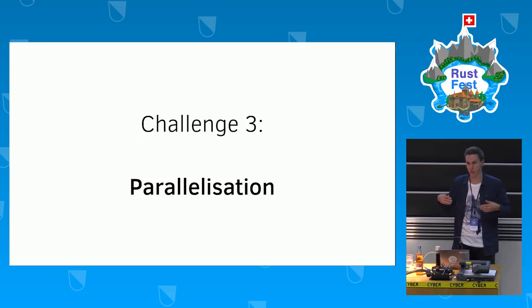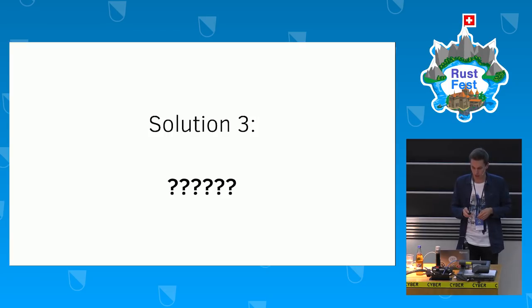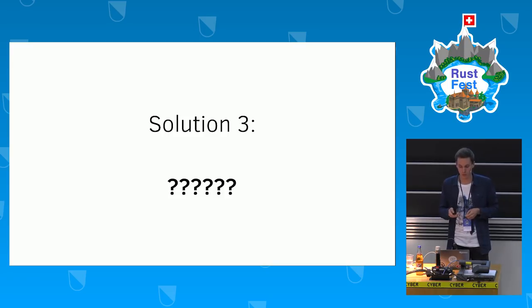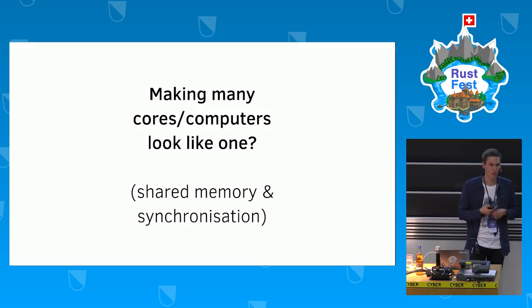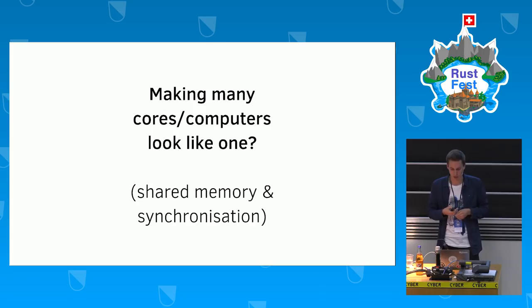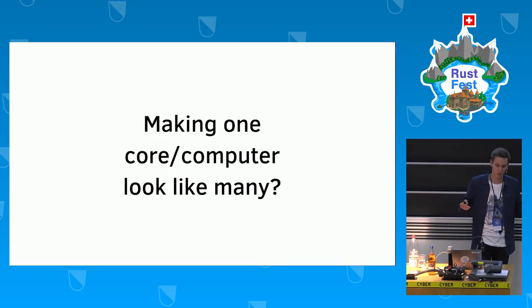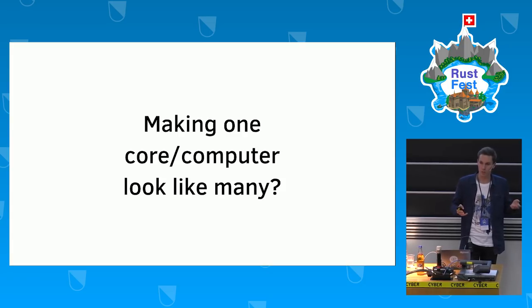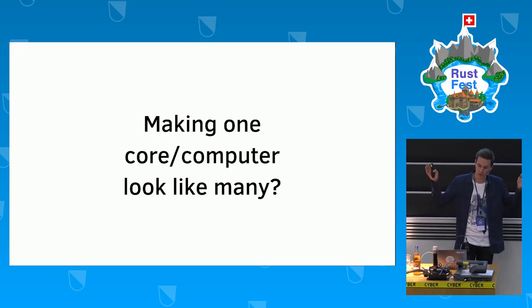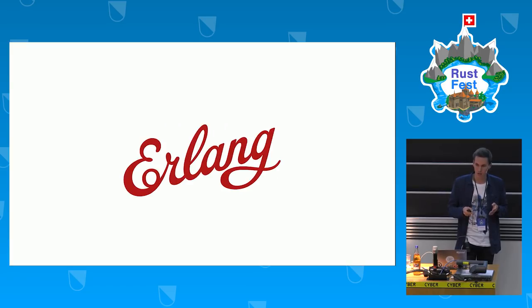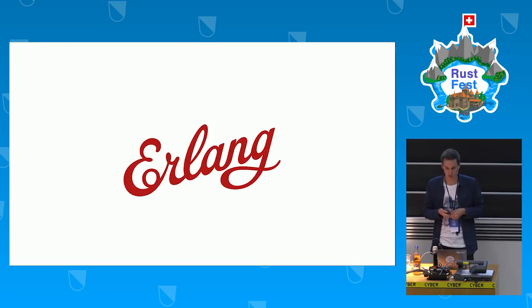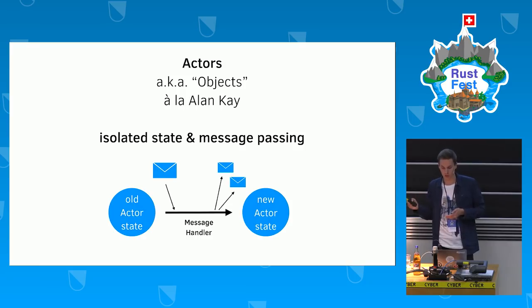The last and toughest challenge was parallelization. It was clear that one core wouldn't be enough to simulate this — maybe not even one computer for really large cities. The traditional approach is to take many cores or many computers and pretend they're one, using shared memory and synchronization, which is inherently unsafe and tricky. But I heard about a different philosophy: what if one computer was really like many computers? How do many computers communicate on the internet? They pass messages. Why not scale that pattern down and say our basic abstraction is a tiny computer — which is an actor.